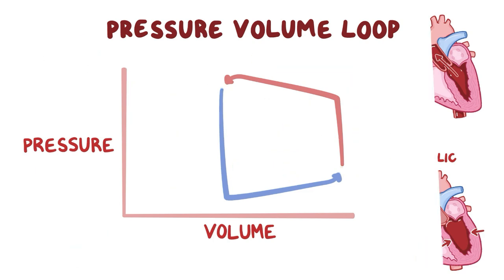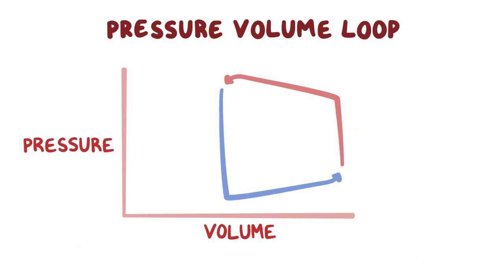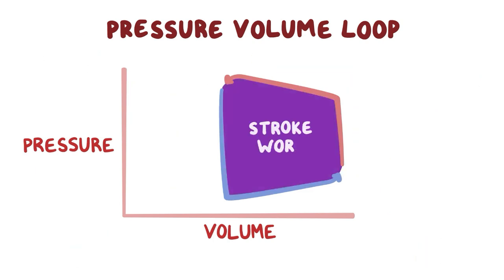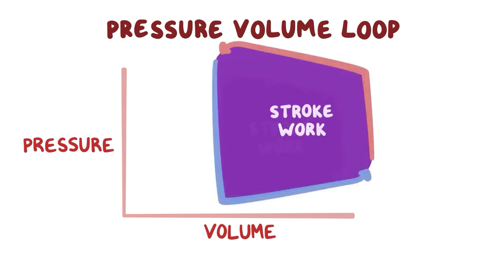All this happens during one heartbeat, and stroke work during one heartbeat is proportional to the area inside the loop. In other words, the bigger the loop and the more the area inside of it, the more stroke work our heart does.